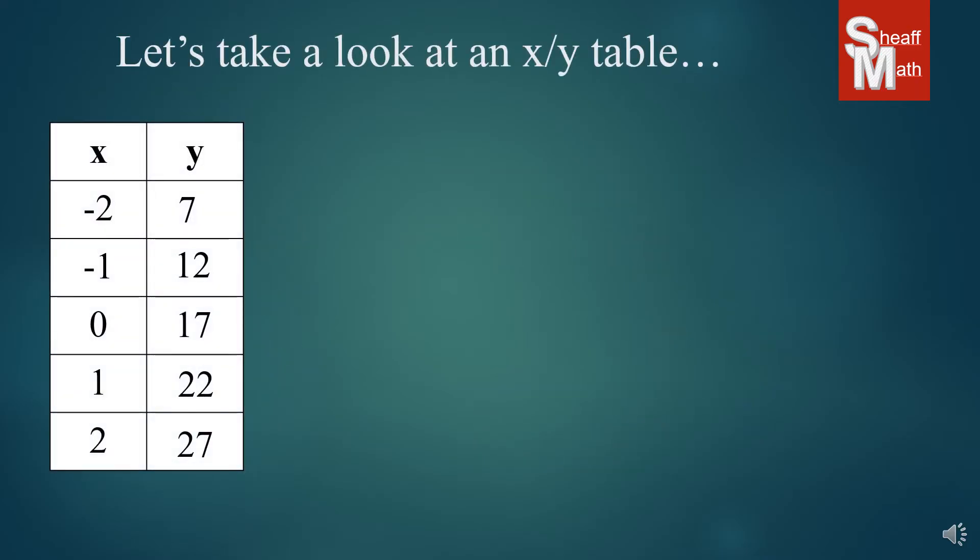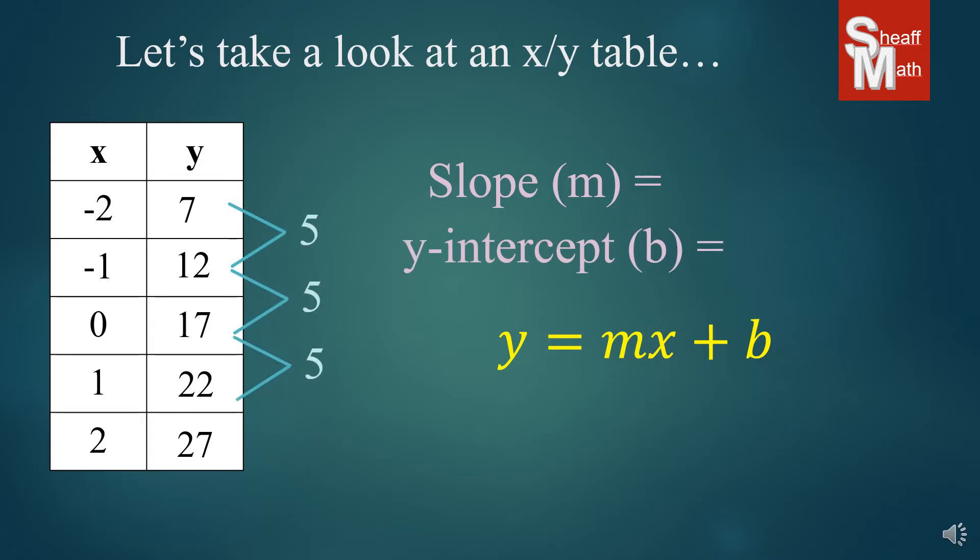Okay, let's take a look at this one. Now I put this one in here because this one kind of tricks students sometimes. So we go about the same method. We're going to find the slope and the y-intercept. And the slope looks pretty easy to find. It's going up by 5. That's not a big deal. So we found our slope.